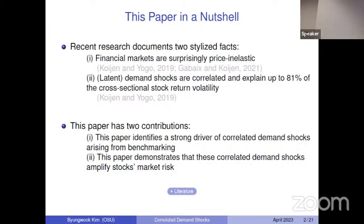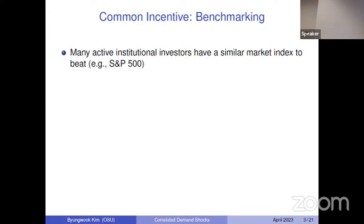By benchmarking I mean active equity institutional investors' common incentive to outperform the stock market index such as the S&P 500. In the active mutual fund space, more than 60 percent of fund managers have the S&P 500 index as their benchmark. If you think about Russell indexes, the number gets even bigger. It's a very common incentive for active fund managers to outperform the stock market.